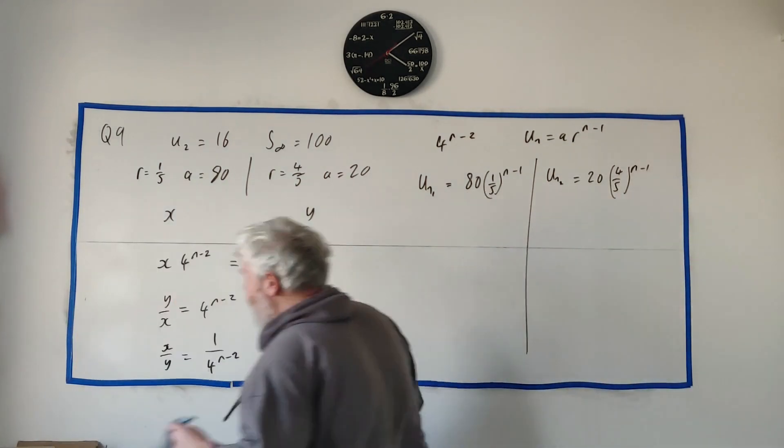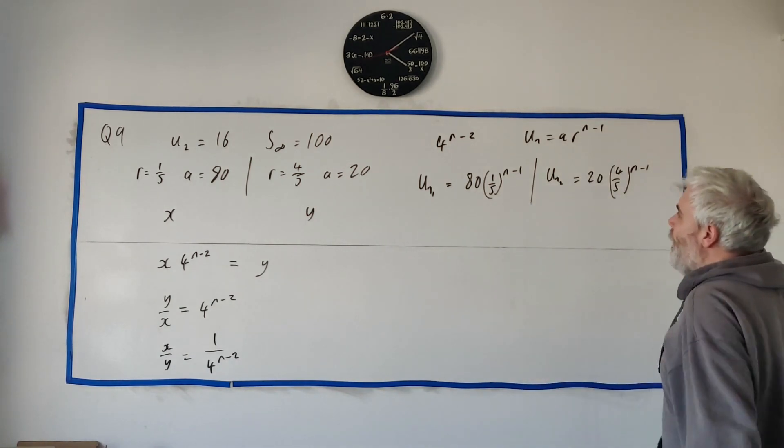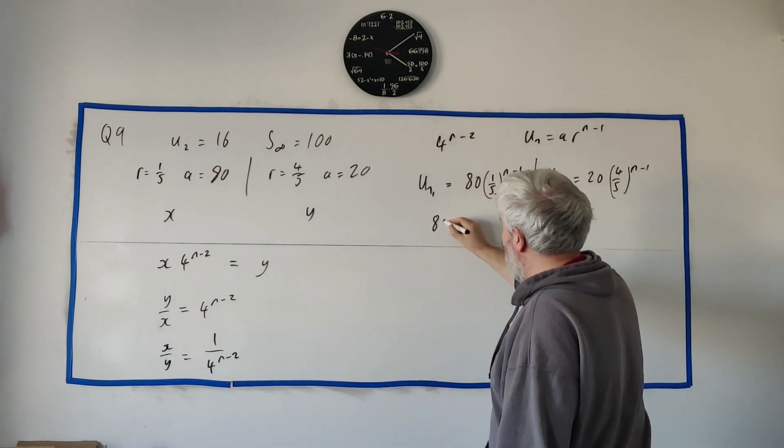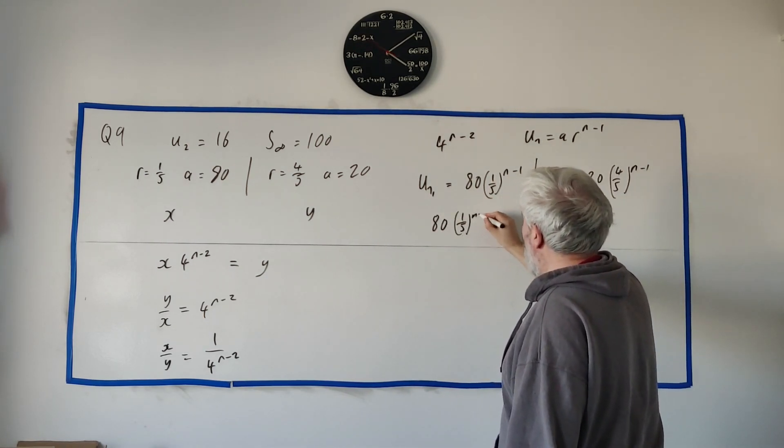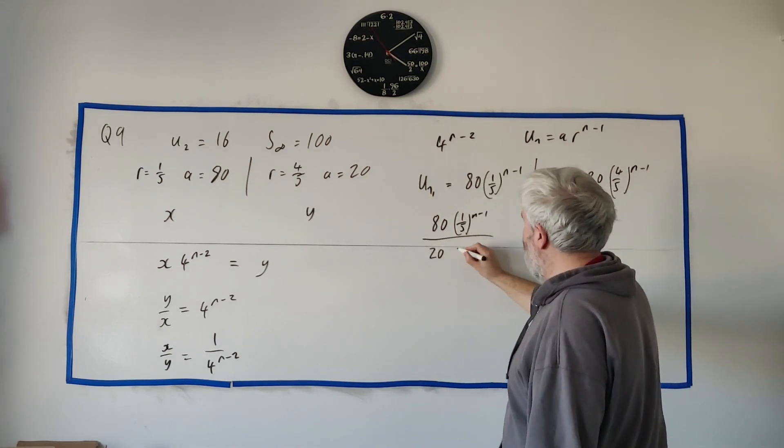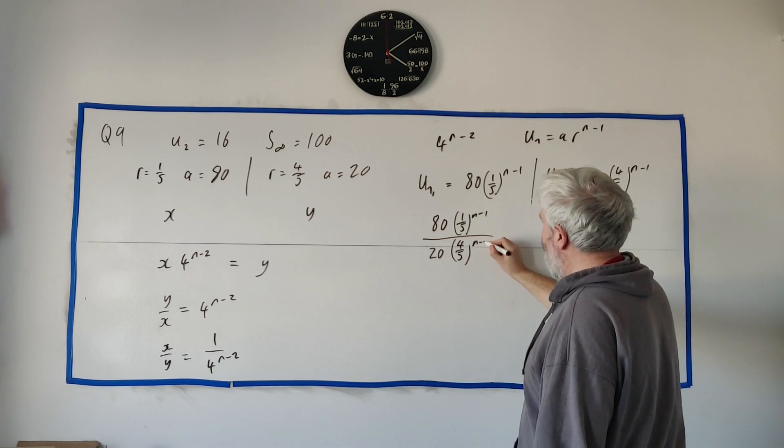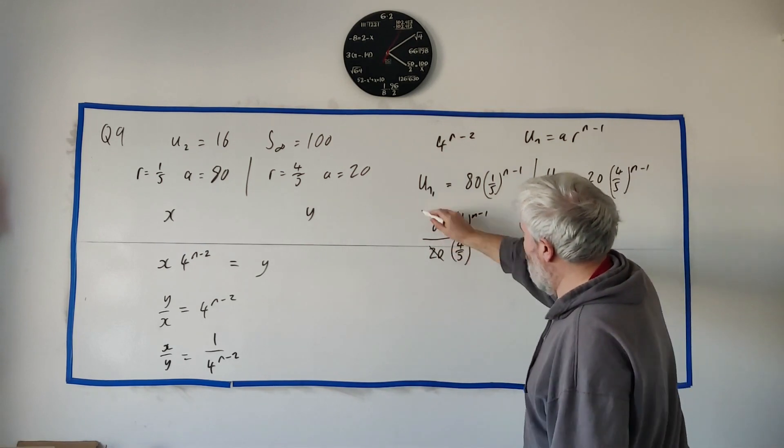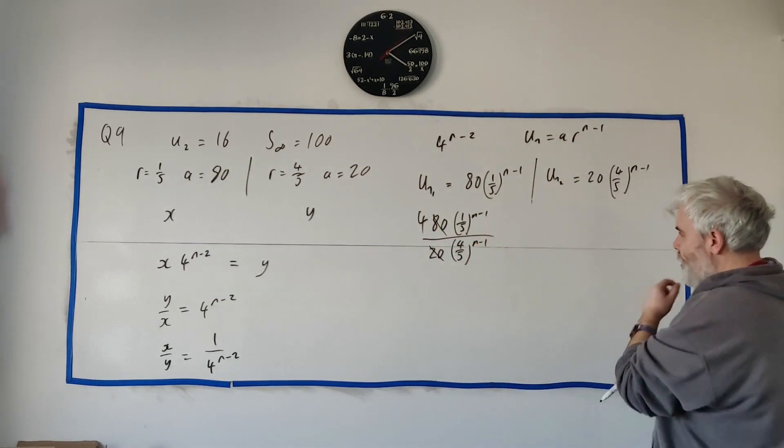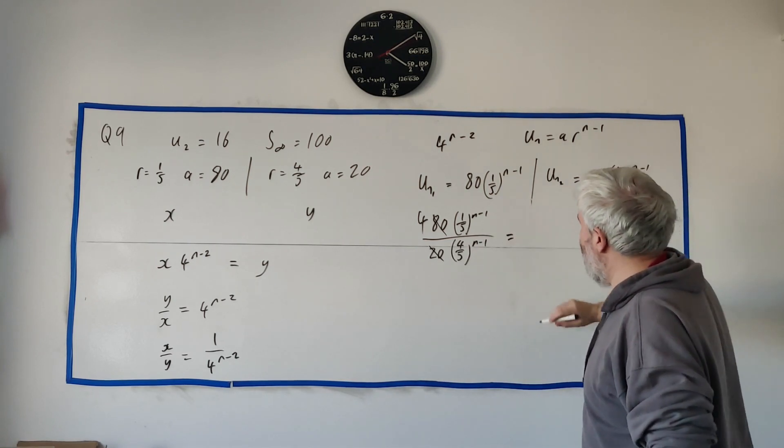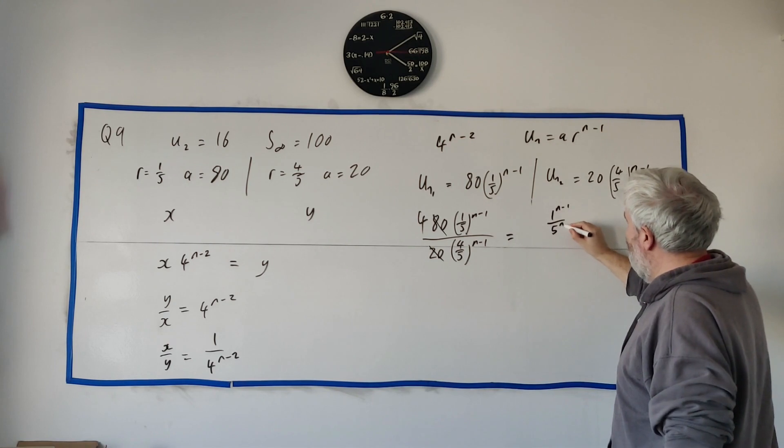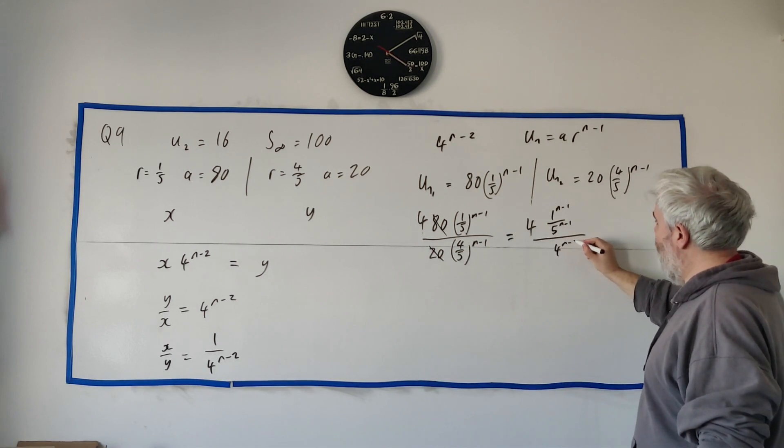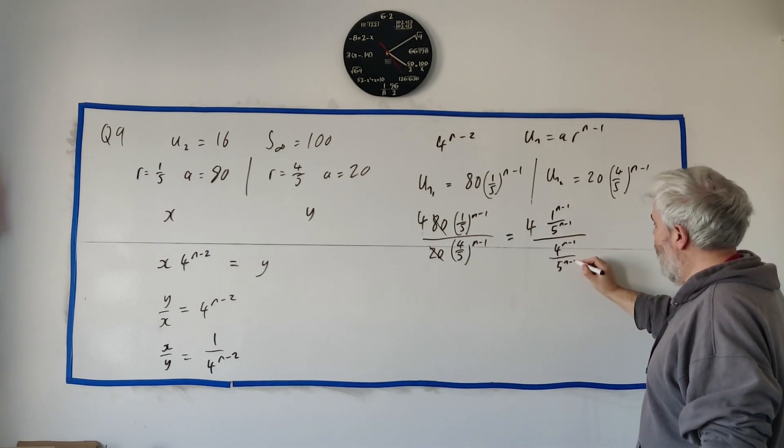I want to divide these two guys. Again, you can pick either one you want. I'll just pick 80(1/5)^(n-1) divided by 20(4/5)^(n-1). The 20 and the 80 is easy. That goes in four times. What do we do with these guys? So the thing to notice here is we can write this again as 1^(n-1) over 5^(n-1). Let's leave 4 out here. 4^(n-1) over 5^(n-1).